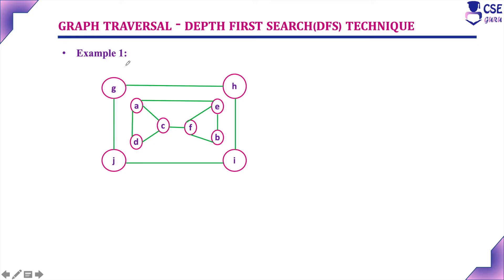The procedure to implement depth first search: initially consider one vertex as the starting vertex and mark A as visited. Next, consider the adjacent unvisited vertices to A, that is C, D and E. Among these three vertices, we need to break the tie by considering alphabetical order, so C comes first. Mark C as visited.